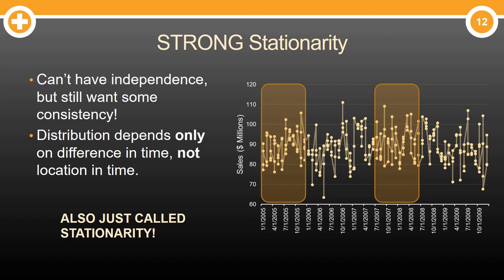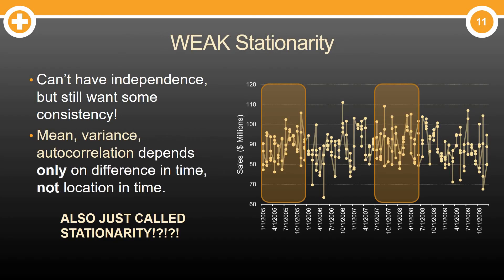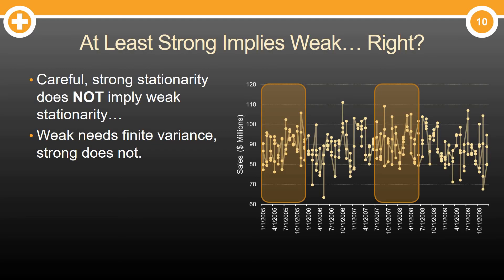That can be confusing because there's also something called weak stationarity, where we don't require the entire distribution in these windows to be the same. We just require some basic things like the mean and the variance, which implies the autocorrelation structure is the same inside these windows — just certain aspects of the distribution. The downside is some people call this stationarity as well.